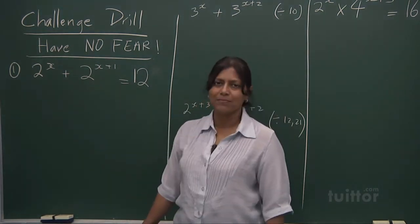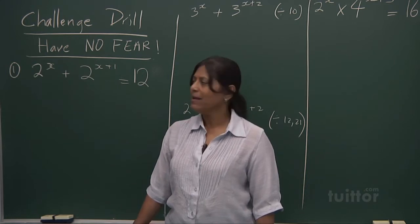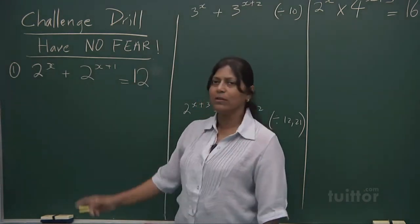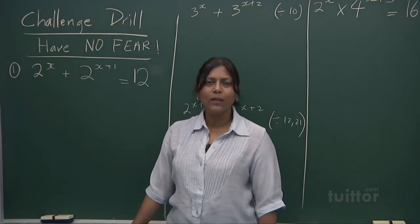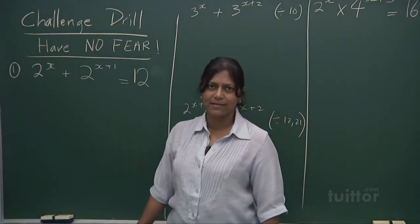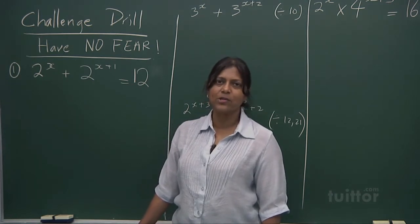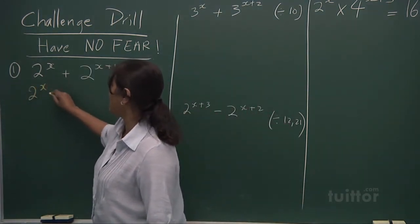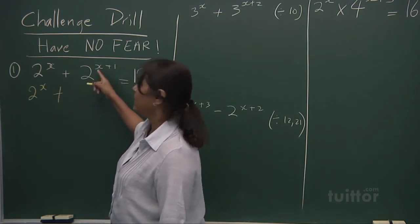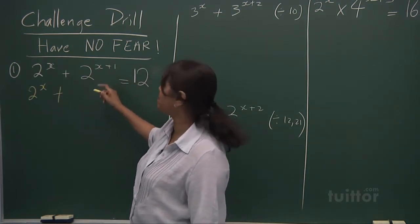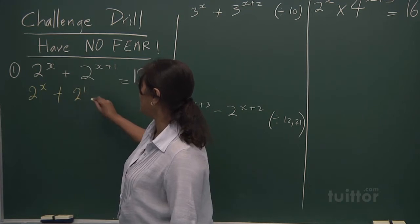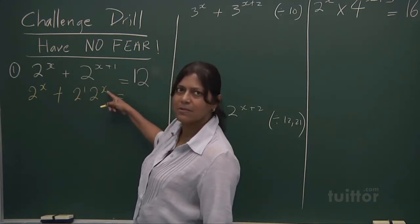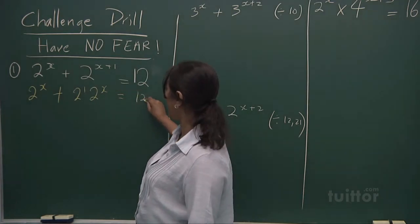Now look at this sum: 2 to the power of x, and you have 2 to the power of x plus 1, is equal to 12. How do you solve for x? This is an equation. You write this as 2 to the power of x, plus — 2 to the power of x plus 1 is 2 to the power of 1 times 2 to the power of x — and that's 12.